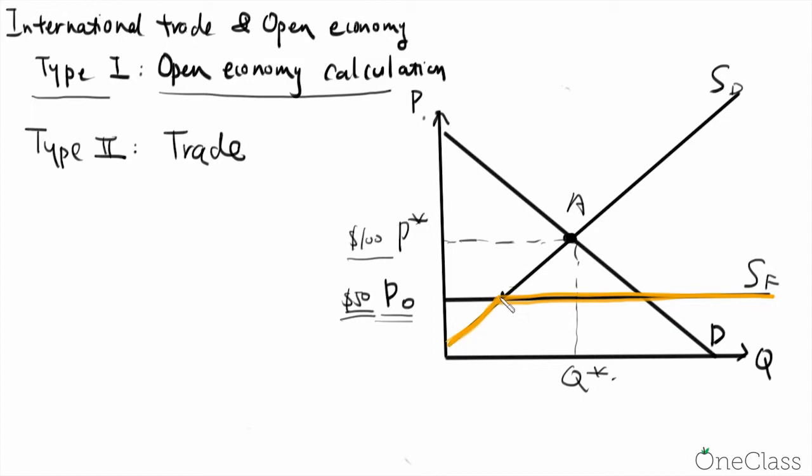So this is the first part. And then at this point, suppliers cannot charge more than $50. So the yellow line is our actual supply curve.